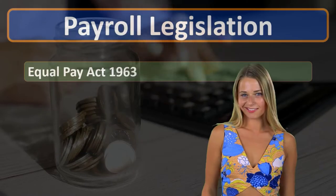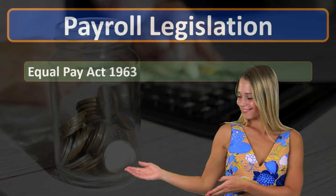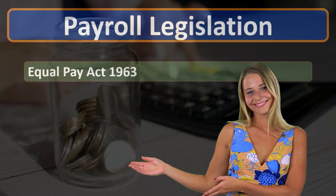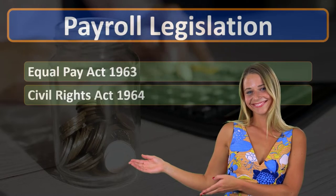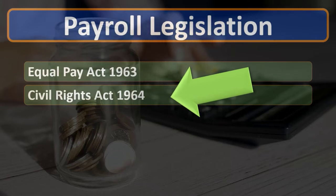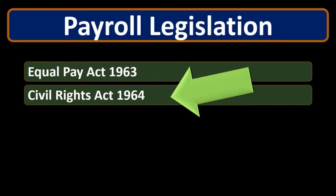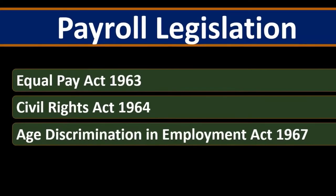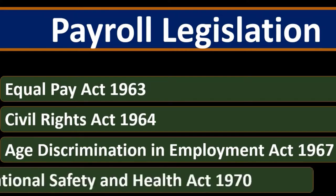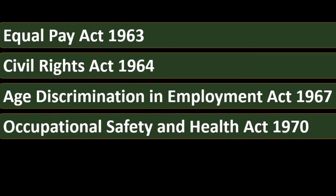We have the Equal Pay Act of 1963, which deals with women in the workforce and working towards having more equal pay for the same work. We have the Civil Rights Act of 1964, which prevents or reduces discrimination based on race, gender, or national origin. We have the Age Discrimination in Employment Act, which prevents or reduces the likelihood of mandatory retirement for workers over the age of 40. And we have the Occupational Safety and Health Act of 1970.